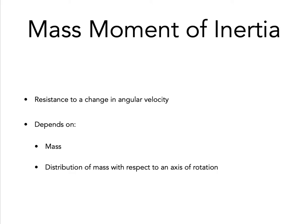Mass moment of inertia: inertia is the linear counterpart of the mass moment of inertia. Mass moment of inertia is resistance to a change in angular velocity, as opposed to linear velocity, and depends on the mass and the distribution of mass with respect to the axis of rotation. Most human motion is angular, not linear, so the concept of mass moment of inertia is directly applicable to human motion.